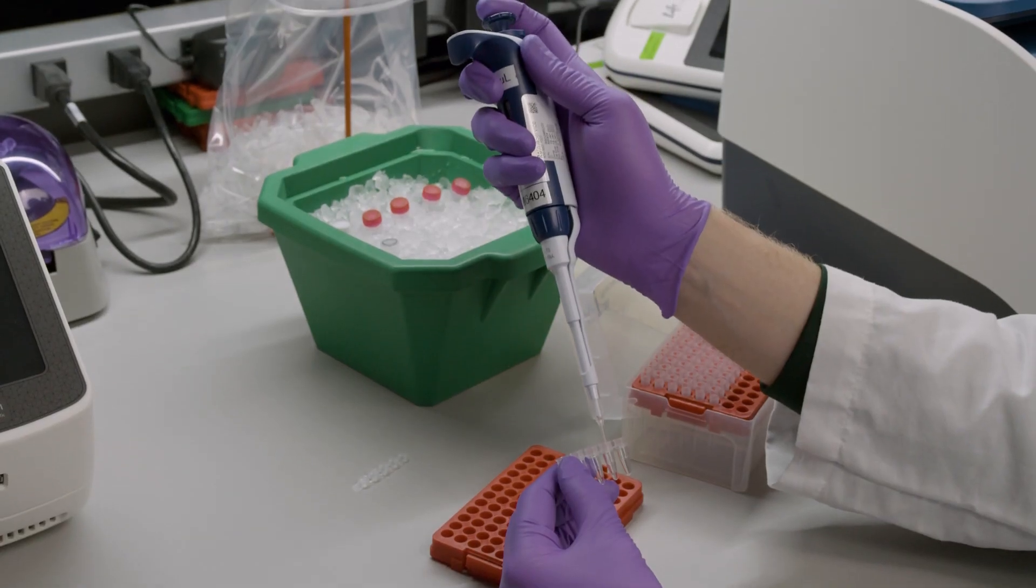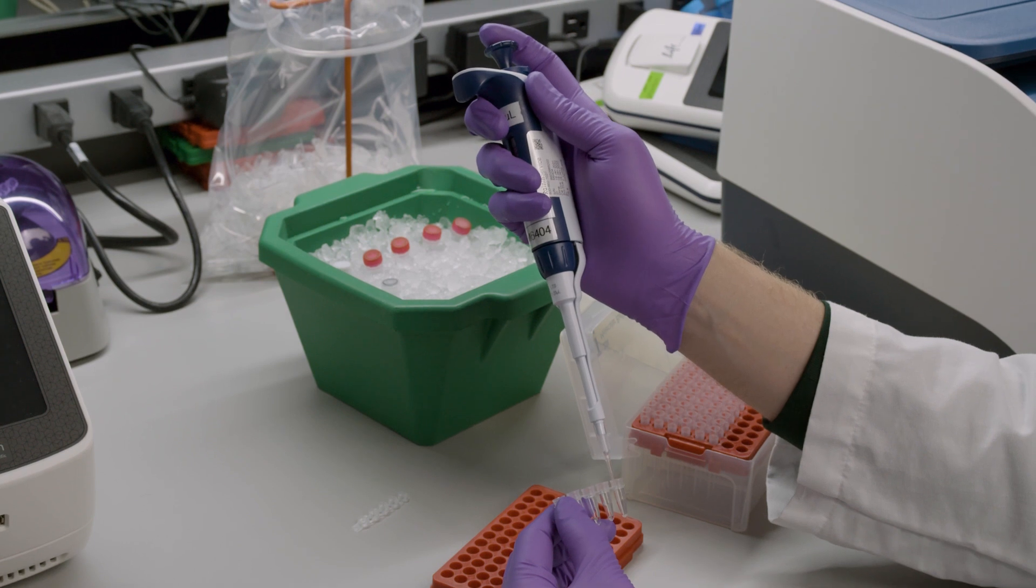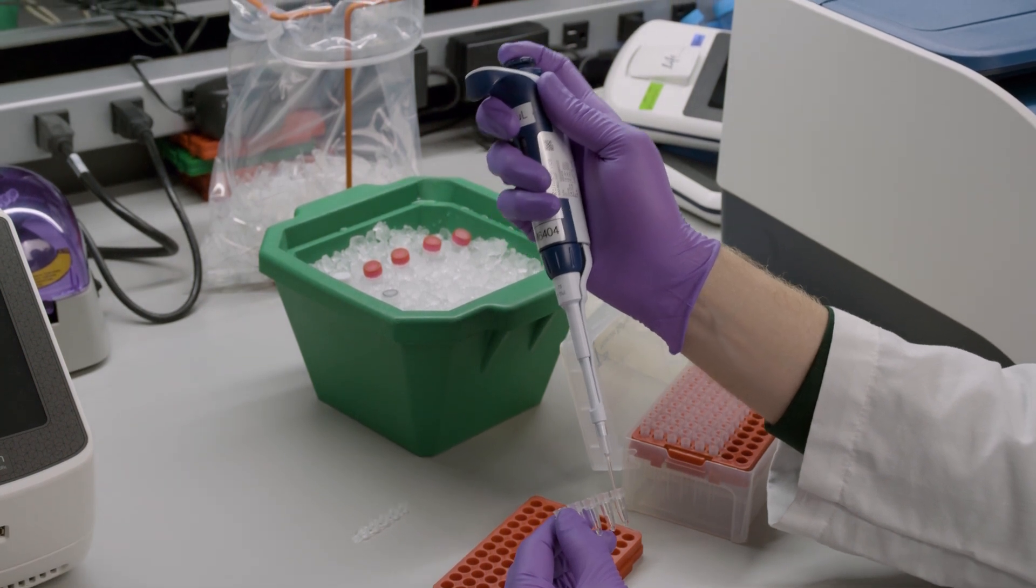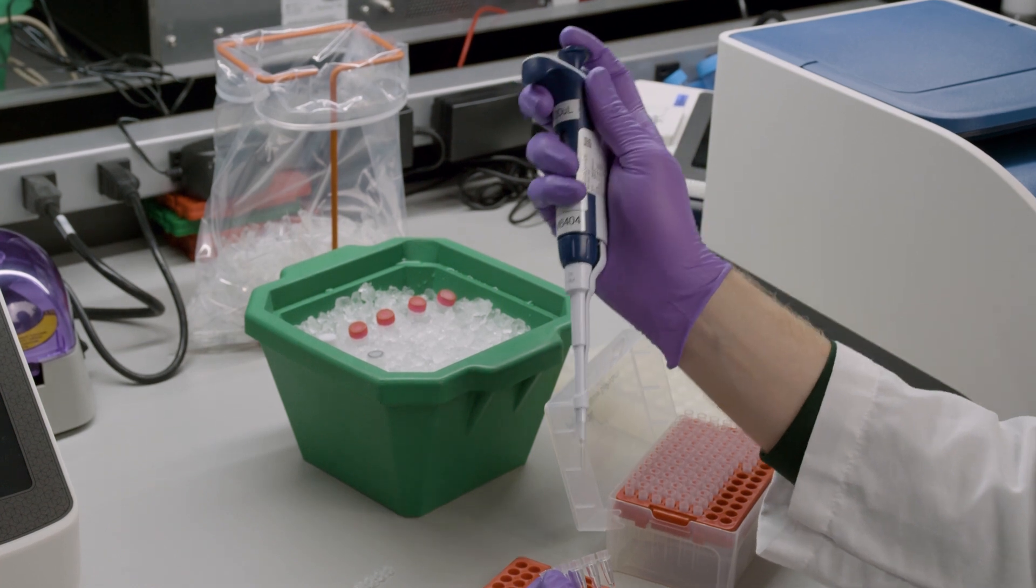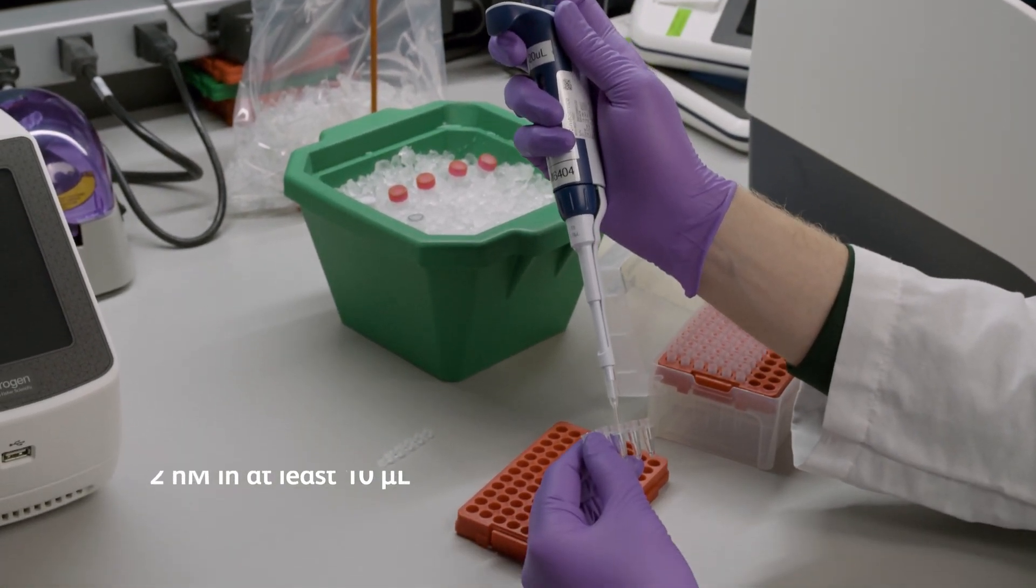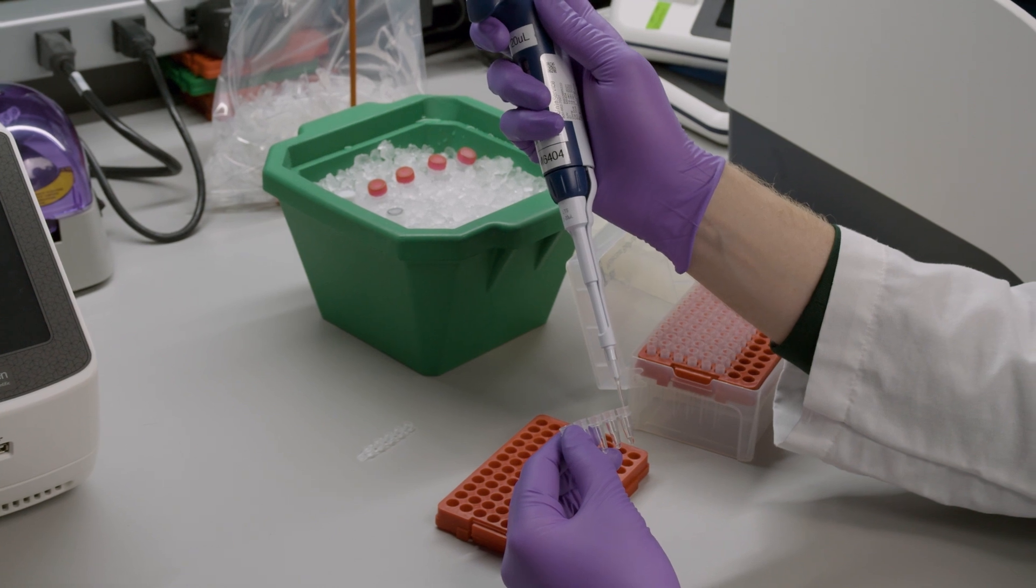With successful QC, we can proceed to generating sequencing libraries from the RPE amplified products. First, aliquot and dilute some of the RPE amplified product to 2 nanomolar and at least 10 microliters if it is higher than 2 nanomolar.